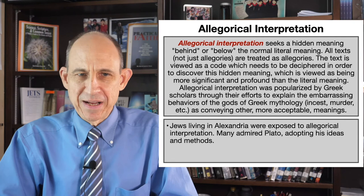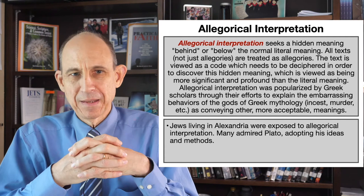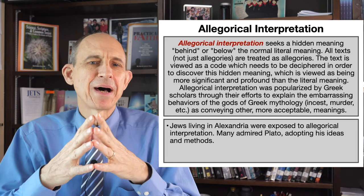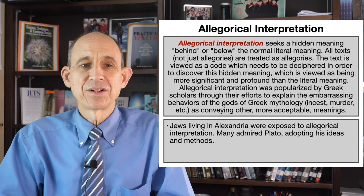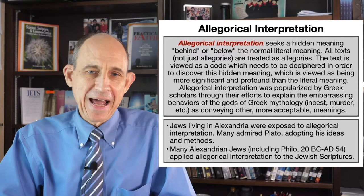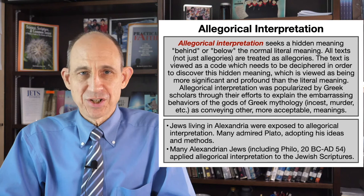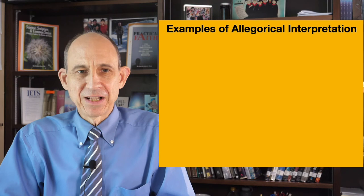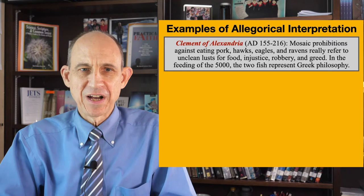Jews living in Alexandria — the center of Greek culture during the intertestamental period — were exposed to allegorical interpretation. Many of these Jews admired Plato, adopted his ideas and methods, including allegorical interpretation. Many of the Alexandrian Jews, including Philo — who was born a little bit before Christ and lived a little bit after Christ's return to heaven — applied allegorical interpretation to the Jewish scriptures. Let me give you some examples of allegorical interpretation. Clement of Alexandria, one of the church fathers who lived from AD 155 to 216, said that Mosaic prohibitions against eating pork, hawks, eagles, and ravens really refer to unclean lusts for food, for injustice, for robbery, and for greed. He also said that in the story of the feeding of the 5,000, the two fish represent Greek philosophy.